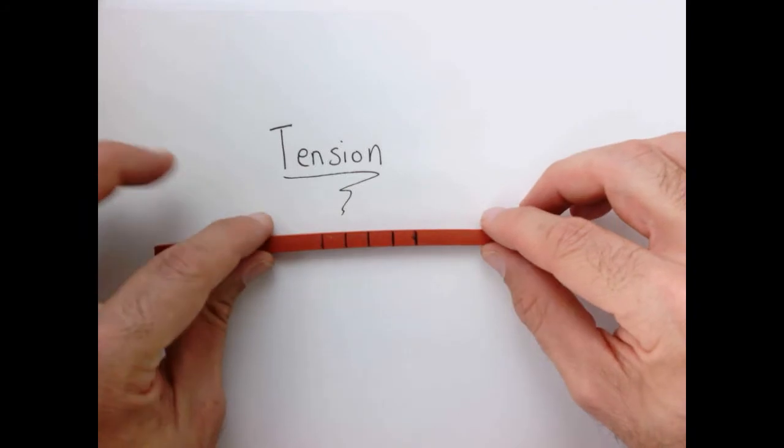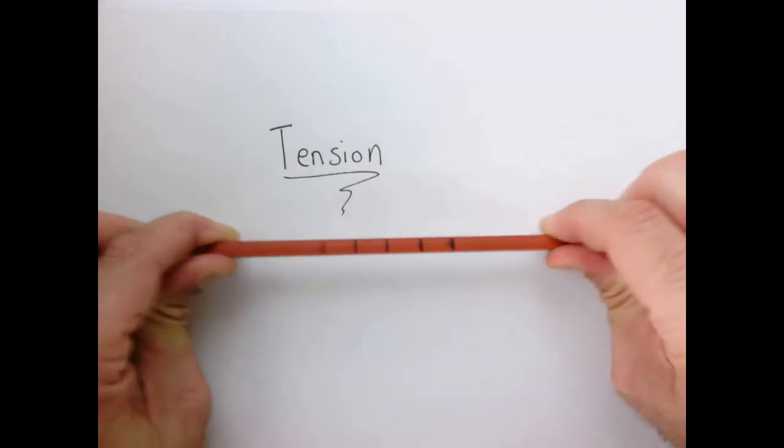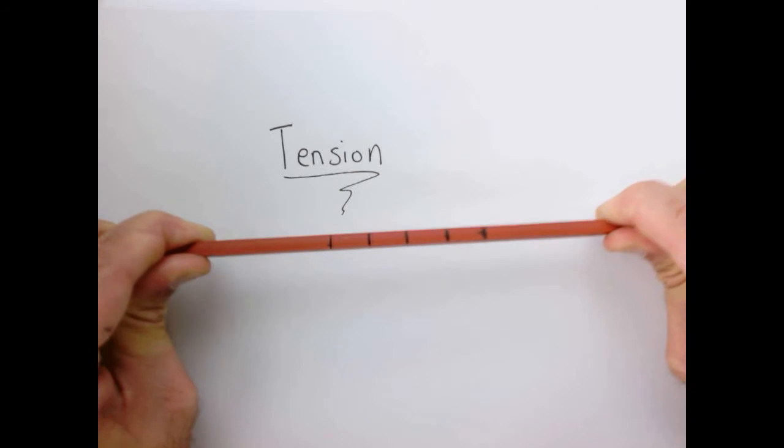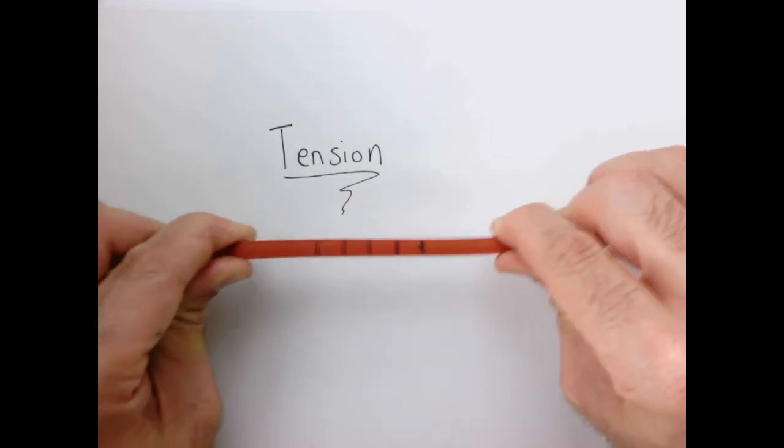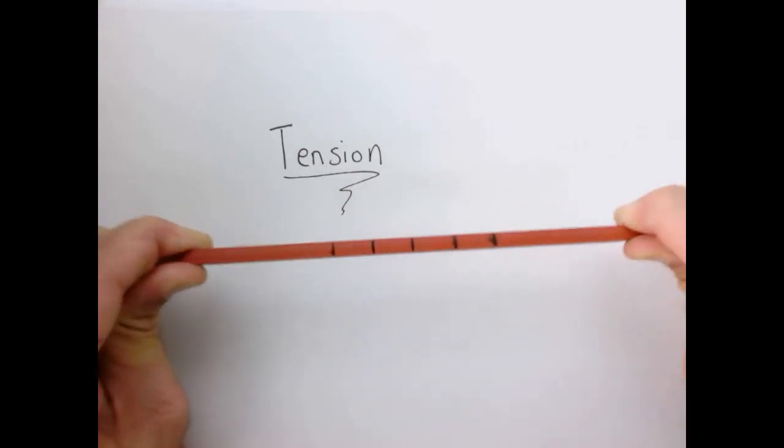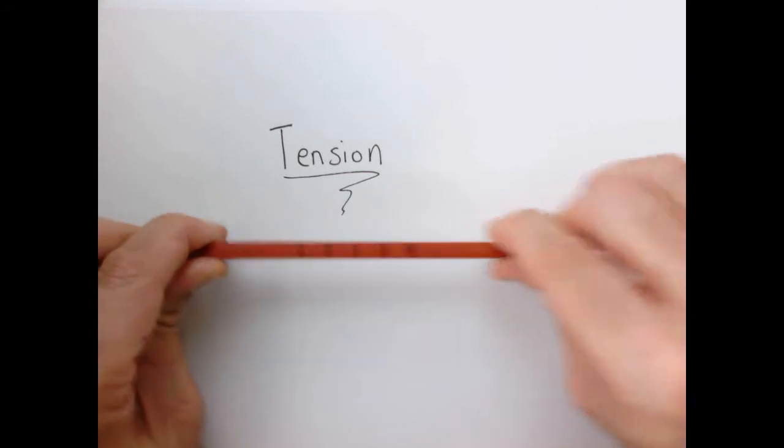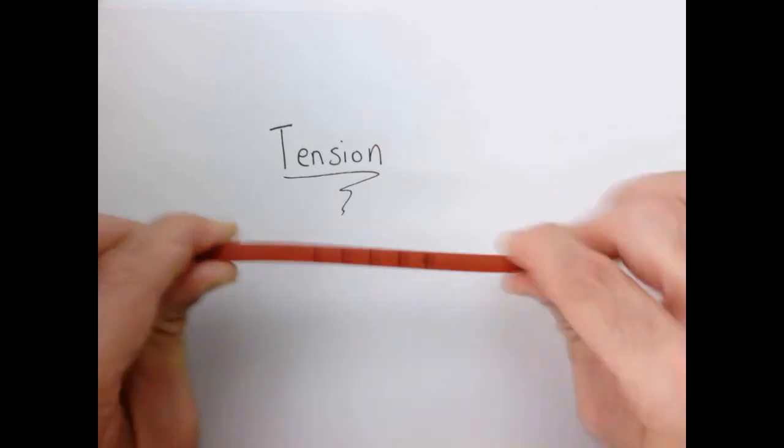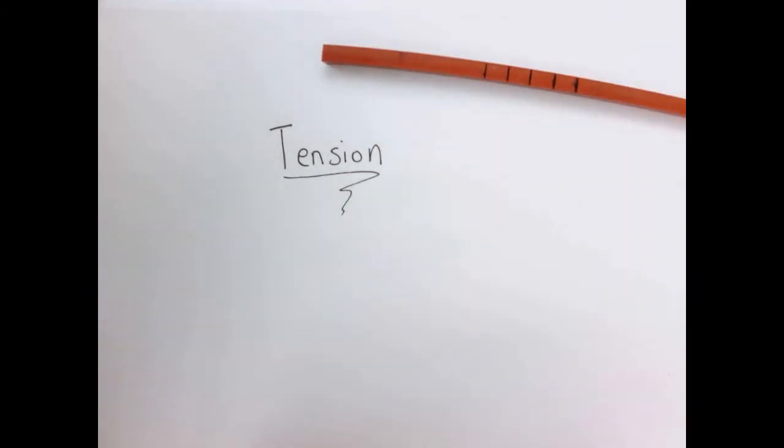So here I have a rubber bar, and if I supply load to it just by pulling on it, so now the object is in tension, we very clearly see that the object elongates. Now that elongation that we see when an object is in tension is something that's quite universal.